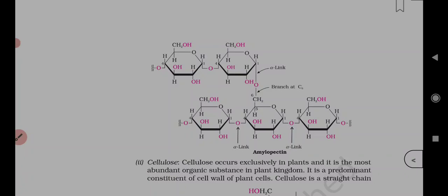To summarize: sucrose has alpha-D-glucose and beta-D-fructose with C1 of glucose and C2 of fructose in linkage — it is a non-reducing sugar. Sucrose is dextrorotatory before hydrolysis but levorotatory after, so it is called invert sugar. Maltose is composed of two alpha-D-glucose units with C1 of one glucose linked to C4 of another — it is a reducing sugar.